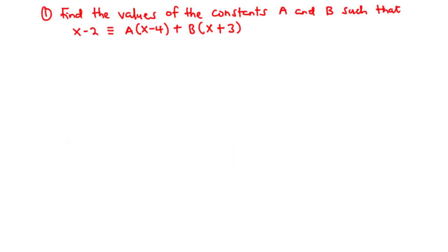Now let's solve Example 1. Find the values of the constants a and b such that x − 2 is identical to a(x − 4) + b(x + 3). To solve this identity there are two main methods: the cover-up method, or the method of expanding and comparing coefficients. For this question we are going to use the cover-up method, which is the quicker method for finding the constants a and b.